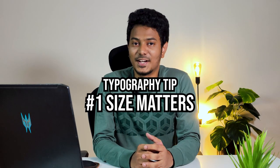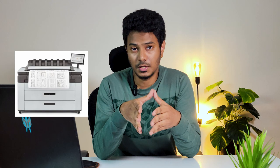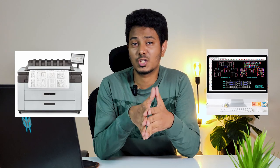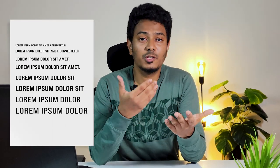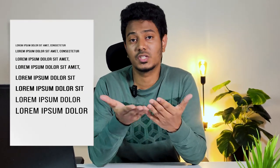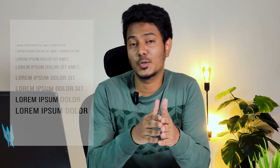Tip number one: size matters. The most basic thing in typography is the font size. We need to be aware of the font size and whether it works with the overall context of the sheet we're working on. Consider if you'll be printing the sheet or only using it in a digital format. If you're printing it, you can take a rough A4 print with different sizes of fonts and use that as a reference for your design presentation sheets — this way you can avoid a lot of mistakes.